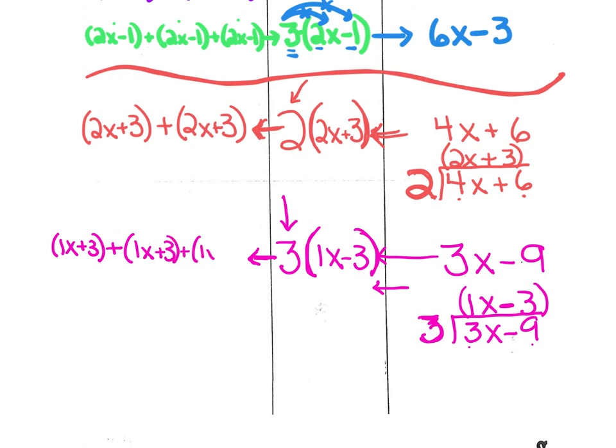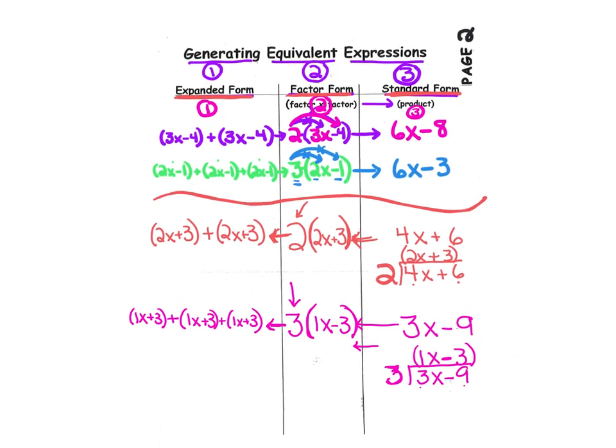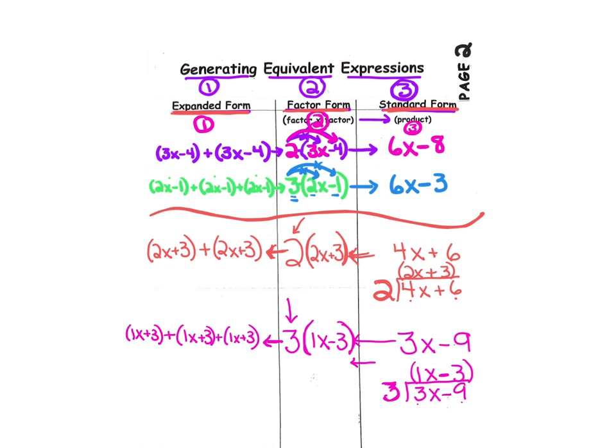Please make sure you have these notes. That's how we work from left to right on the table and right to left. Remember, there are three forms that we're going to be using: expanded form, factor form, and standard form. This concludes page one. Please make sure you have all the notes.